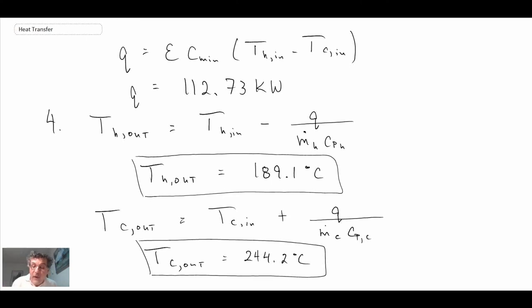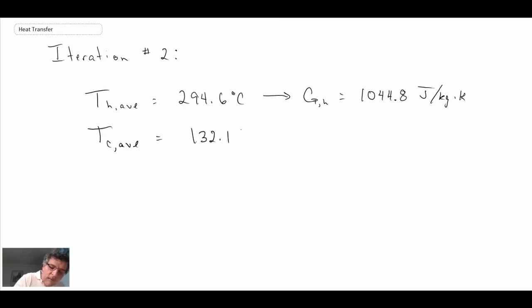That would be iteration number one, and technically what you should do is iterate this problem again. To do that, you compute a new average temperature for the hot fluid and a new average for the cold fluid. You find that this is going to be the minimum fluid because the mass flow rates are the same. From this step on, you go through the exact same procedure again, and hopefully it converges after doing the calculation one more time.